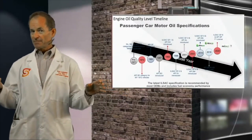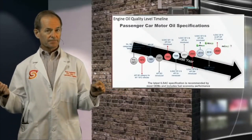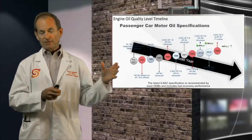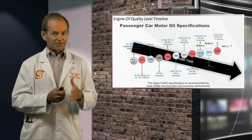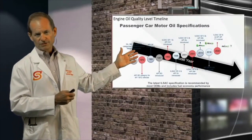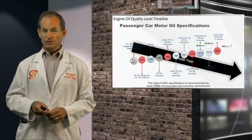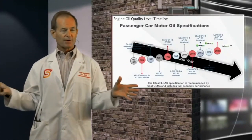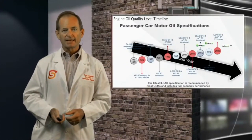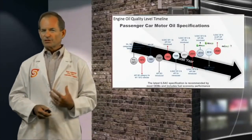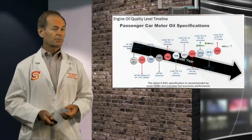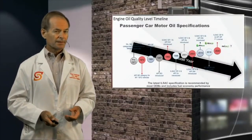The new one is API service level SP. These are all done alphabetically — the oil for old engines way back in the day was just a straight mineral oil with no additives. That's API SA. Adding just a touch of anti-oxidation additives puts you at API SB.